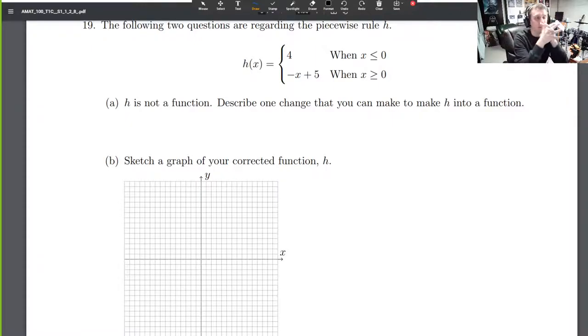The following two questions are regarding the piecewise rule H. Piecewise just means we've taken our graph and broken it into two pieces, and this rule is going to describe those two pieces. Here's piece one: it's 4. Whenever we plug in a number that's less than or equal to zero, we always give out 4.